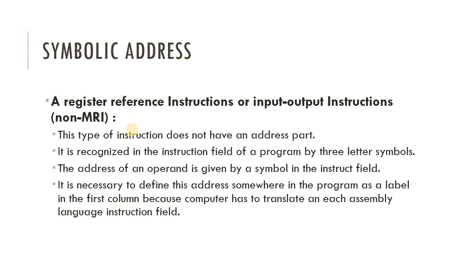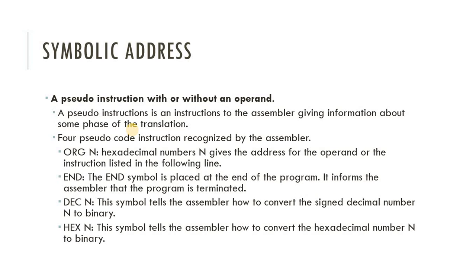Register reference and input-output instructions are also called non-MRI instructions. These types of instructions do not have an address part and are recognized in the instruction field by three symbols. The address of an operand is given by a symbol in the instruction field, and it is necessary to define this address somewhere in the program as a label in the first column, because the computer must translate each assembly language instruction field.